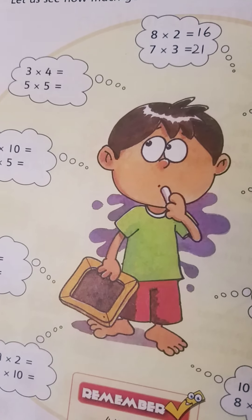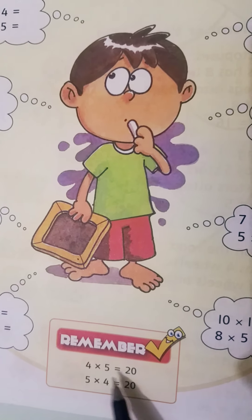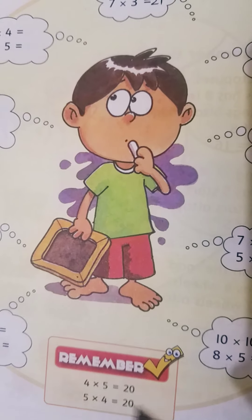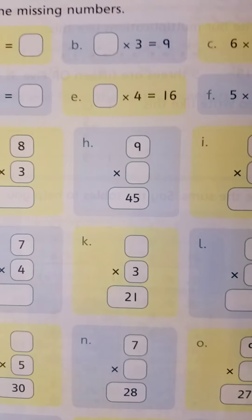If you multiply 4 by 5 or multiply 5 by 4, the answer remains the same. 4 times 5 is 20, or 5 times 4 is 20. Complete page number 55 also.